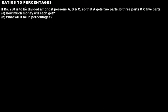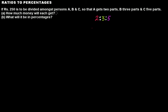The next problem: Rs. 250 is to be divided amongst persons A, B, and C such that A gets 2 parts, B gets 3 parts, and C gets 5 parts. So the ratio in which this amount is divided is 2:3:5. There are two parts to the question: how much money will each get, and what will it be in percentages?